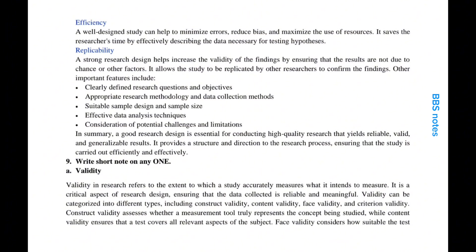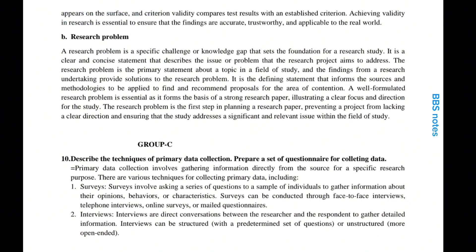Write a short note on validity. Validity in research refers to the extent to which a study accurately measures what it intends to measure. It is a critical aspect of research design, ensuring that the data collected is reliable and meaningful. Validity can be categorised into construct validity, content validity, face validity and criterion validity. Construct validity assesses whether a measurement tool truly represents the concept being studied, while content validity ensures that a test covers all relevant aspects of the subject. Face validity considers how suitable the test appears on the surface, and criterion validity compares test results with an established criterion. Achieving validity is essential to ensure findings are accurate, trustworthy and applicable to the real world.